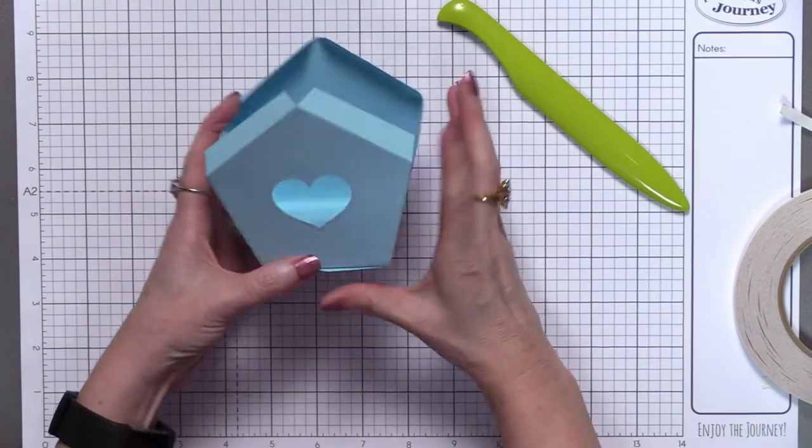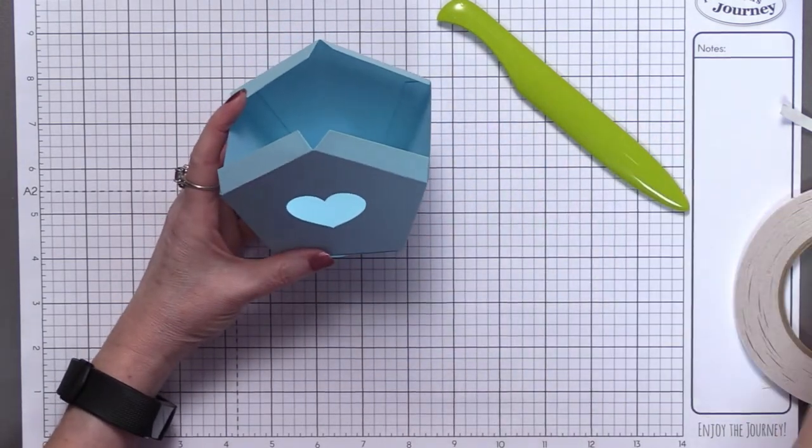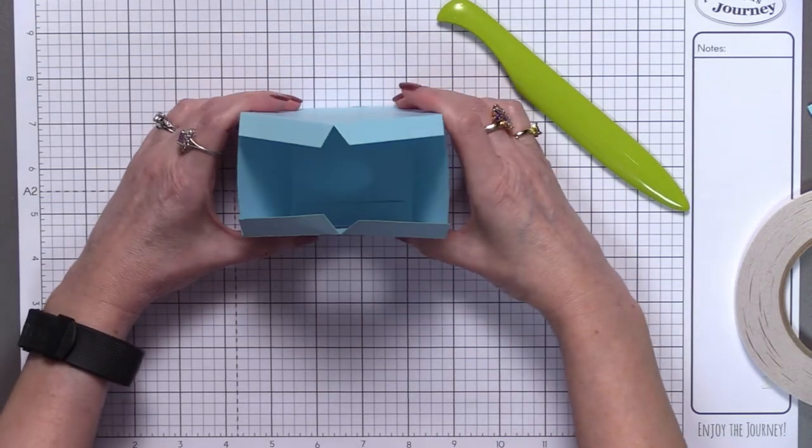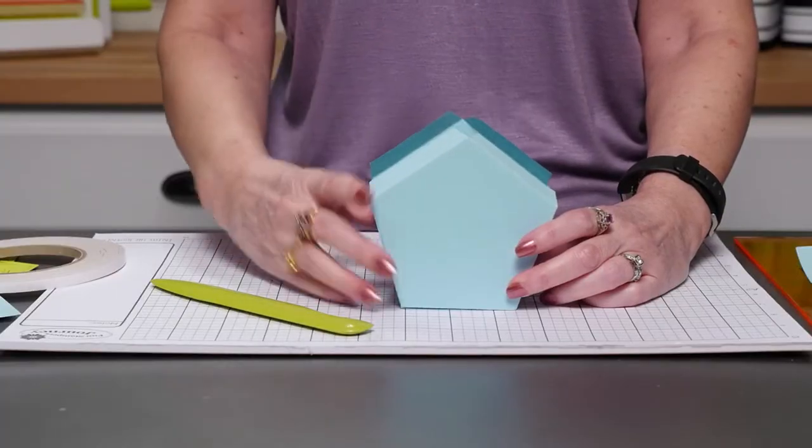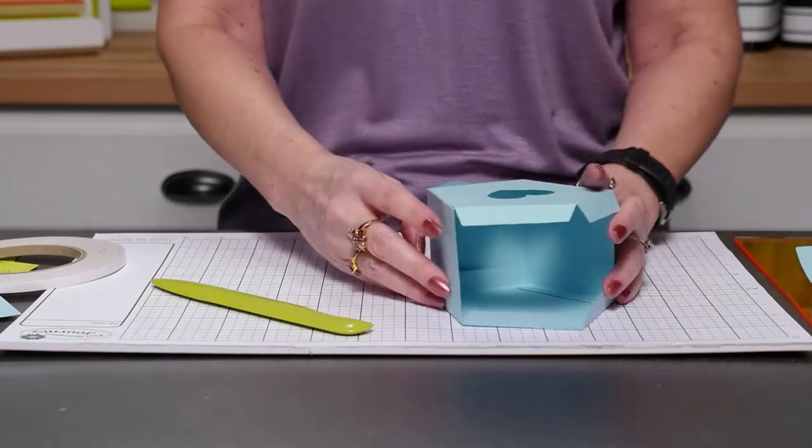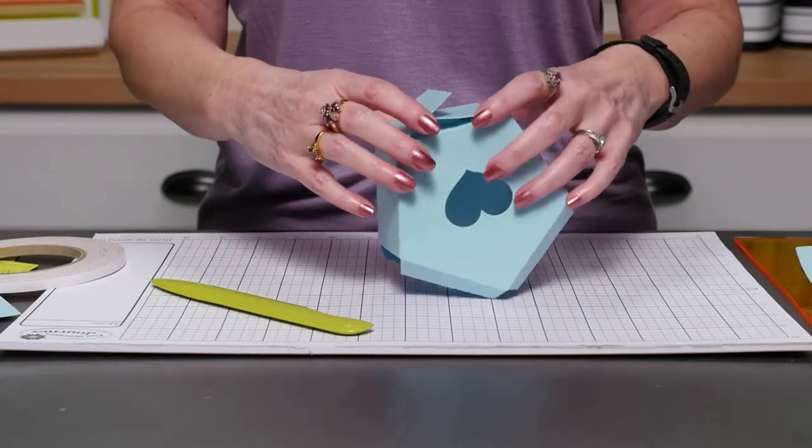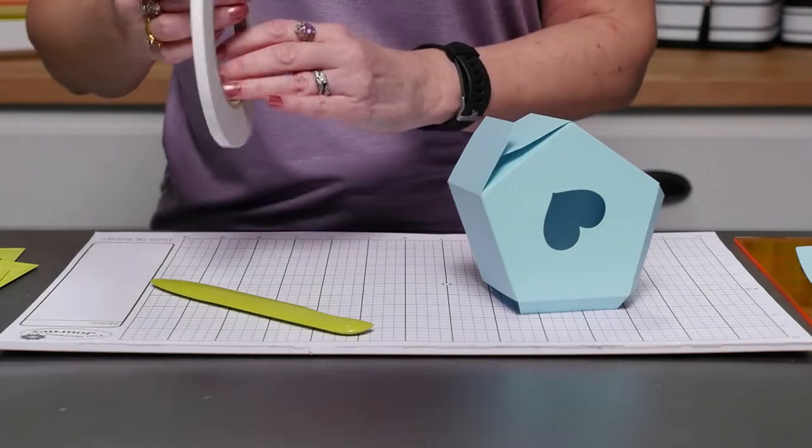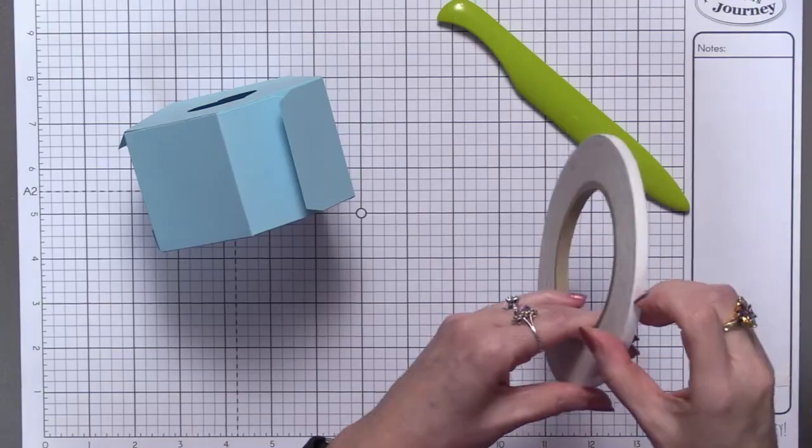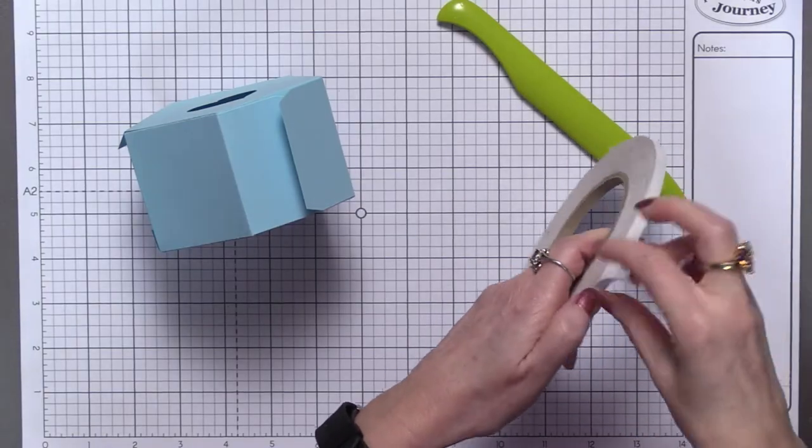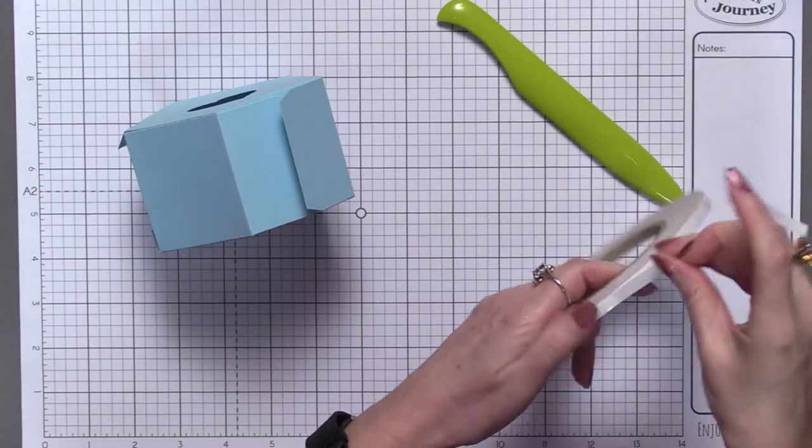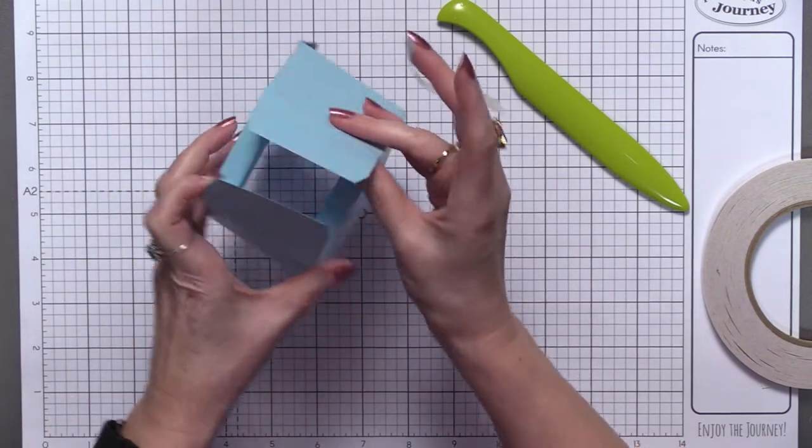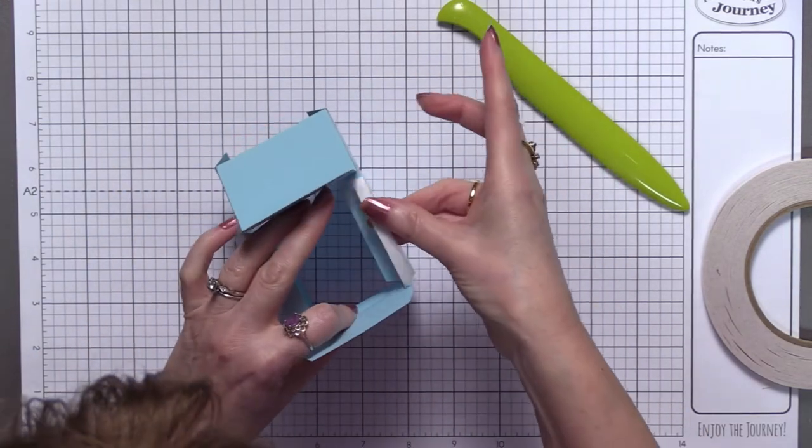The next thing we're going to do is we are going to adhere the floor closed before we tackle the roof. The reason we do that is the more stable this box is, the easier it is to attach a roof. Let's see here, we can just go ahead. We can use some white liner tape on this, and again, if you're actually filling this with little treats, you might consider reinforcing the floor by using your craft glue.